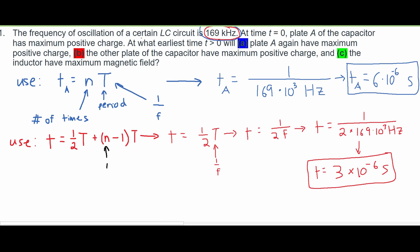For part C, we're asked, at what earliest time T greater than 0 will the inductor have maximum magnetic field? For this, we are going to start our formula with our T time equaling to 1 fourth times T, which is our period. Just like in part B, we have this starting part.